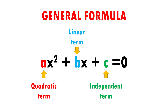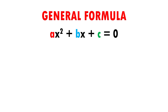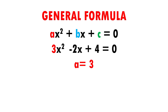To make this clear, let's see some examples. Here I have 3x squared minus 2x plus 4 equals 0. The letter a equals 3 because it is the number by the x squared. The letter b equals minus 2 because it is the number by the x, and the letter c equals 4 because it is the number that stands alone.